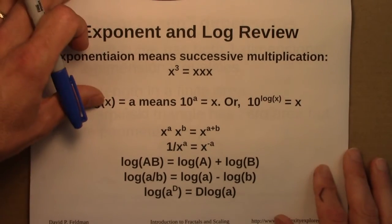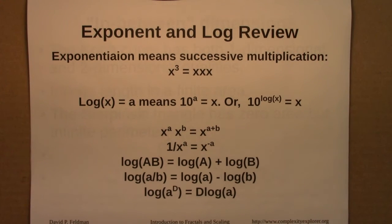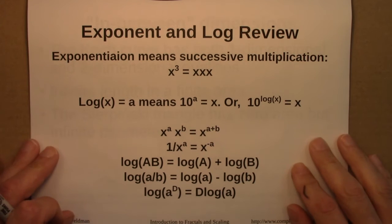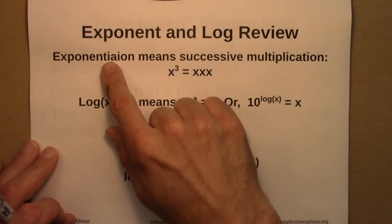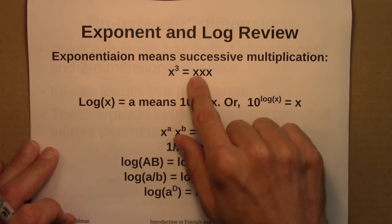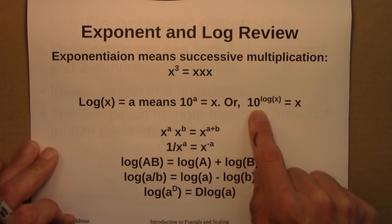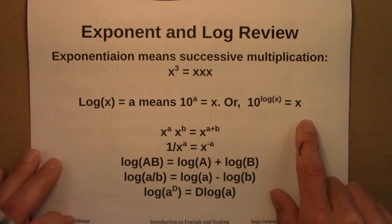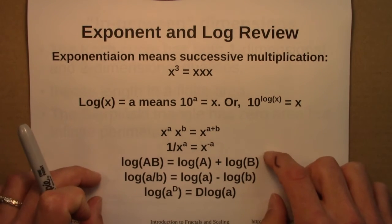Along the way, we did a quick exponent and log review. This was an optional section, but I included it as a useful reference. The main thing is that exponentiation is defined to be successive multiplication, and the definition for a log is: 10 to the log x equals x. From properties of exponents and the definition of logs, all of these useful properties follow.